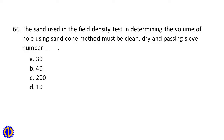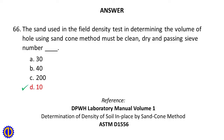Question 66. The sand used in the field density test in determining the volume of hole using sand cone method must be clean, dry and passing sieve number blank. A. 30, B. 40, C. 200, D. 10. Answer: D. 10. Reference: DPWH Laboratory Manual Volume 1 and ASTM D1556, Determination of Density of Soil in Place by Sand Cone Method.